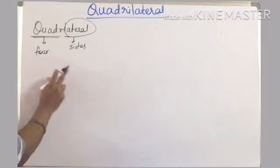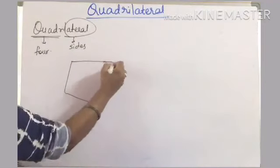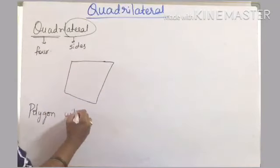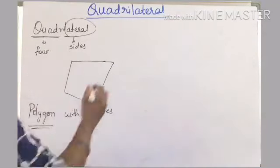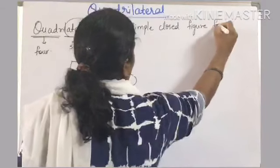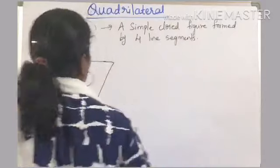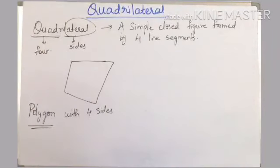In geometry, a quadrilateral can be defined as a closed two-dimensional shape which has four straight sides. It is a polygon with four sides. A simple closed figure formed by four line segments, or simply a polygon with four sides, is called a quadrilateral.